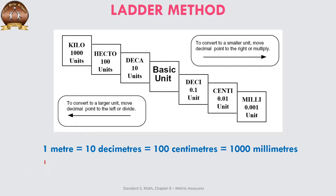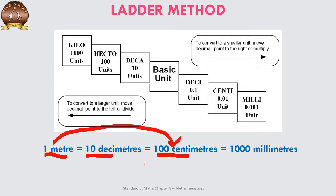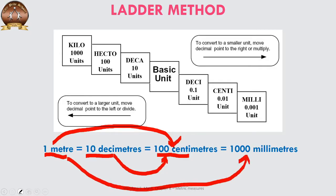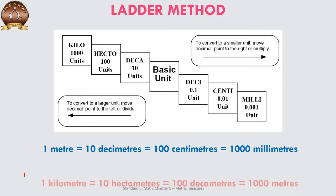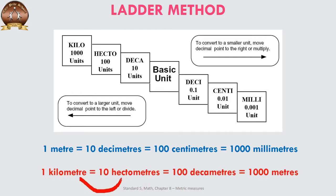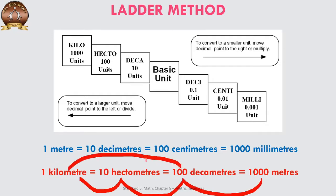Before we move further, I would like to inform you that one meter is equal to ten decimeters, which is equal to one hundred centimeters. One kilometer is equal to one hundred decimeters, which is further equal to one thousand millimeters and one hundred centimeters.